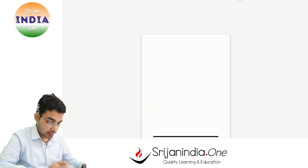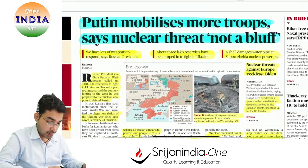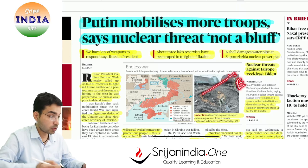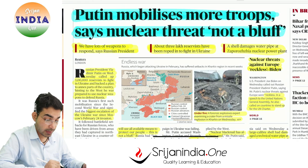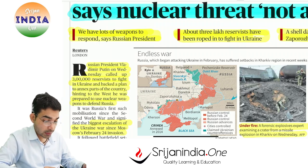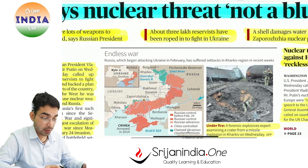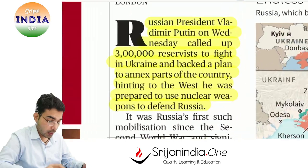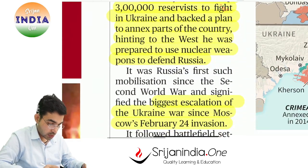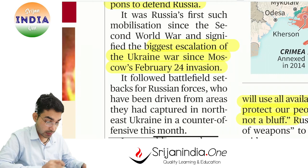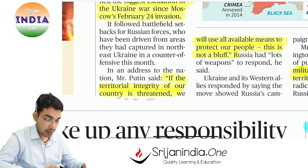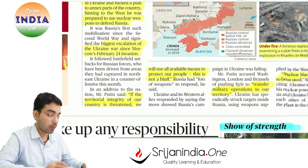First news from The Hindu's front page — a disturbing development: Russian President Putin mobilizes more troops and says the nuclear threat is not a bluff. If Russia is pushed to the corner, it may use nuclear weapons. About three lakh reservists have been called into fight in Ukraine. Putin stated: 'If the territorial integrity of our countries is threatened, we will use all available means to protect our people. This is not a bluff.' This is the biggest escalation since Moscow's February 24th invasion.